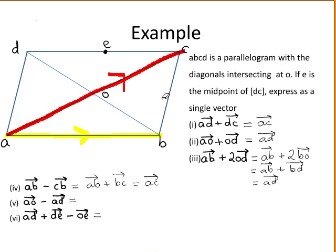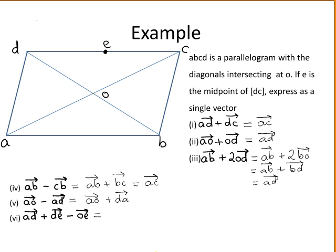The fifth part asks you to find vector AO minus vector AD. We change minus vector AD to plus vector DA, since changing the direction of a vector changes its sign. So we add vector AO plus vector DA. It's easier to rewrite this as vector DA plus vector AO, just rearranging the addition. Using the triangle law to add these two vectors, we get the vector DO.